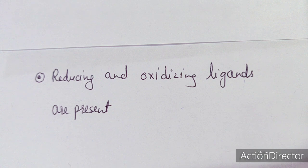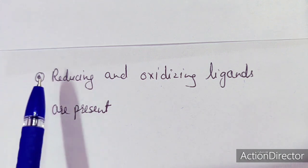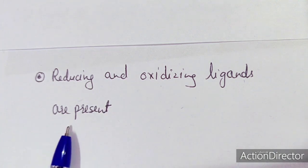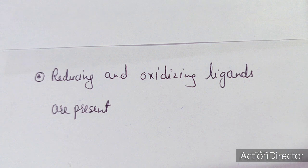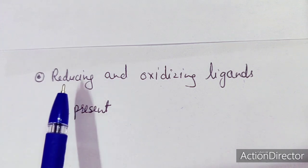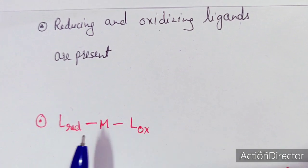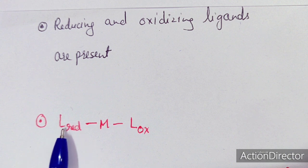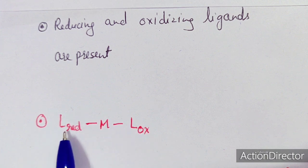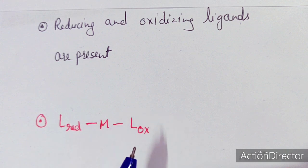In ligand-to-ligand charge transfer, both reducing and oxidizing ligands are present in the complex. This is essentially a redox-type transition because one ligand should be oxidized and the other should be reduced. So for LLCT transitions to occur, one ligand donates electrons through the metal ion to another ligand — one ligand is reduced and the other is oxidized.